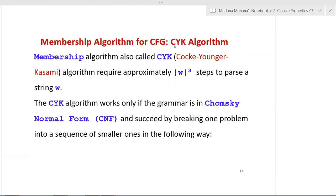The membership algorithm for context free grammars is called the CYK algorithm. CYK stands for the names of three scientists: C for Cocke, Y for Younger, and K for Kasami. The CYK algorithm can only be applied to a context free grammar that is in Chomsky Normal Form. It requires |w|^3 steps to parse or derive a string w for the given context free grammar.